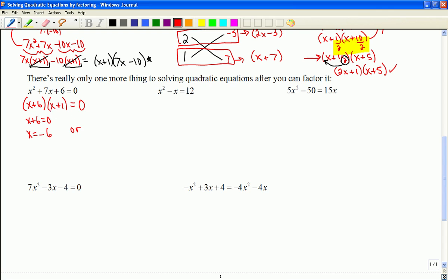Or, another way we could do it is we could take this piece and make it equal to 0. So x would equal negative 1. So those are my two solutions. x equals negative 6 and negative 1.